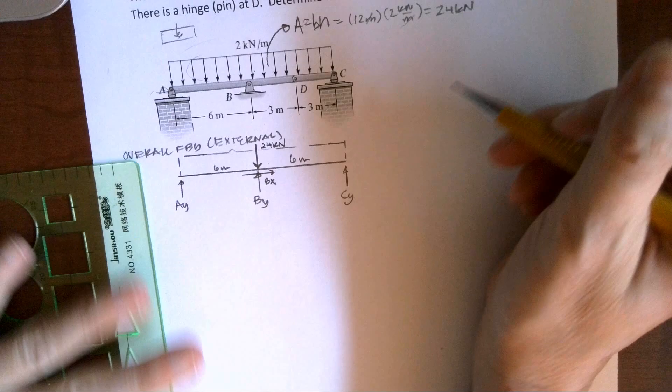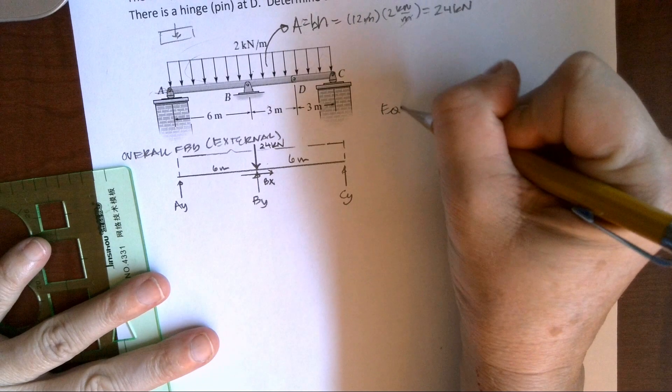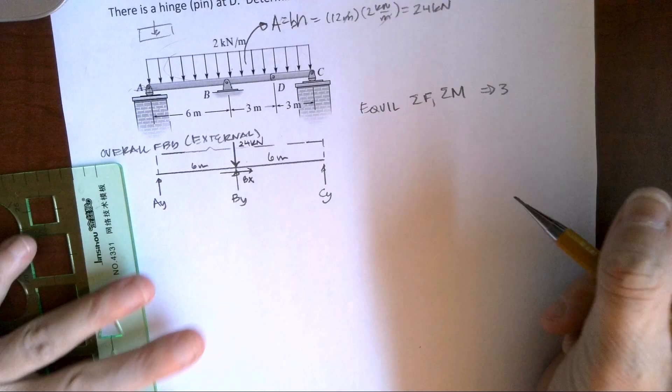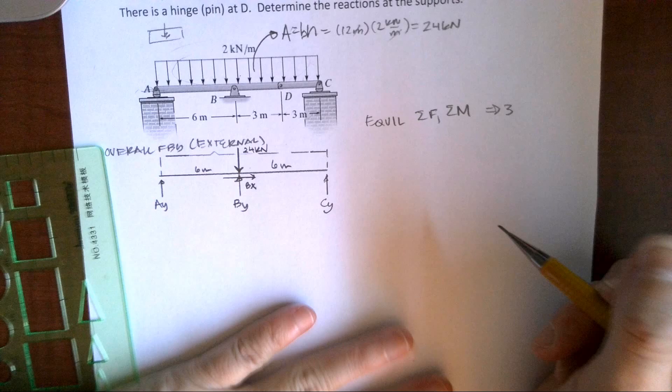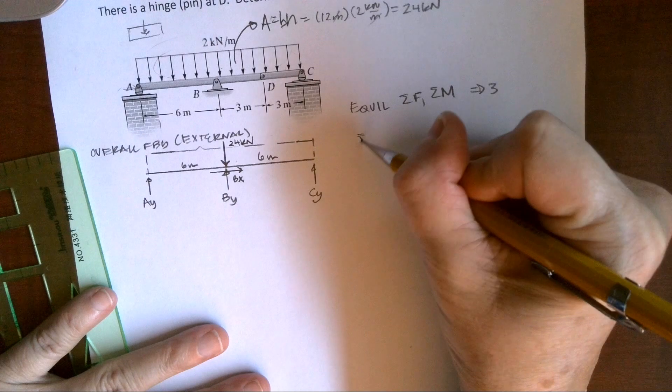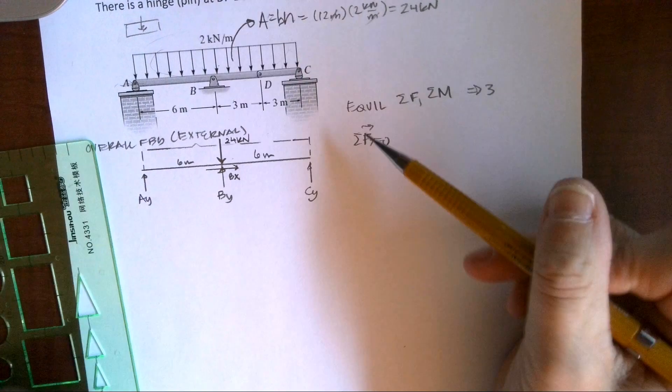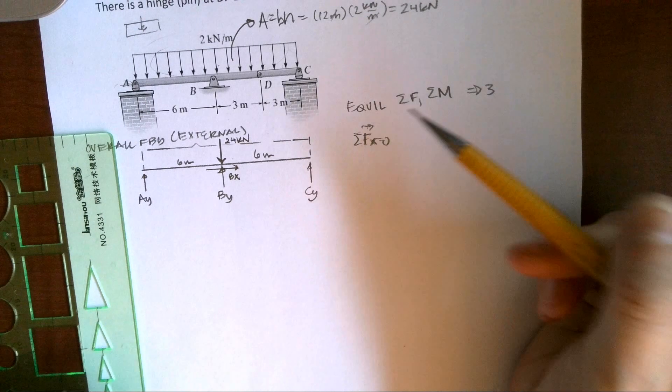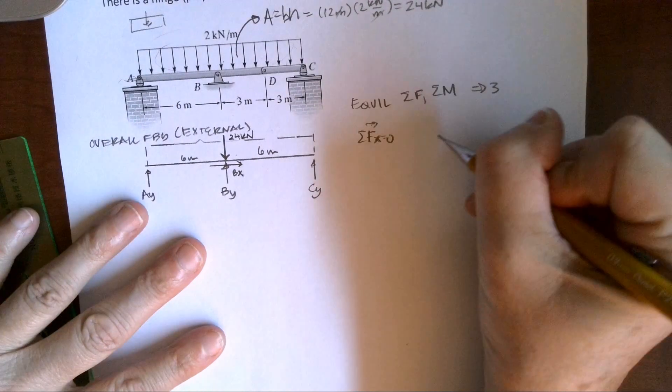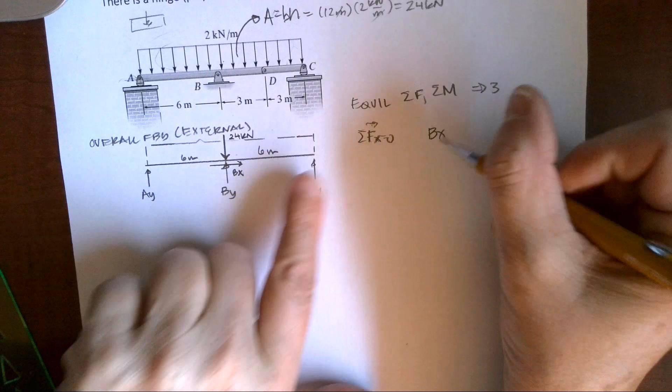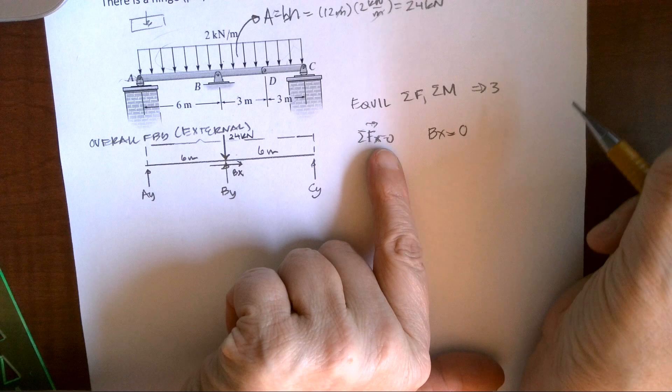So I have 24 kilonewtons, I have 6 meters, and I have 6 meters. So we can go ahead and start with our typical equilibrium equations. We can sum forces and we can sum moments. And we have three of these when we're looking at a beam in 2D. So I'm going to start with summing forces in the X direction. I'm summing forces, what direction I'm summing, and what I'm going to call positive. And we know the sum of our forces equals 0. So I'm going to quickly go across. The only force I have is BX. So BX equals 0.